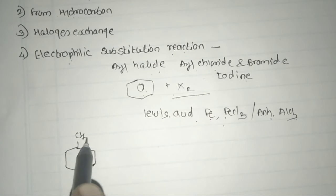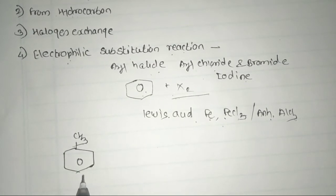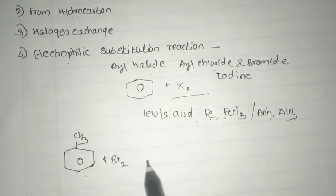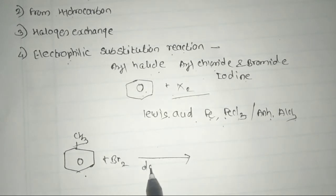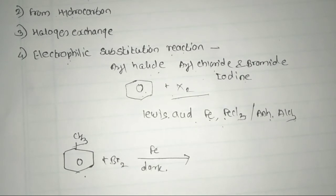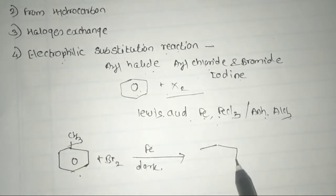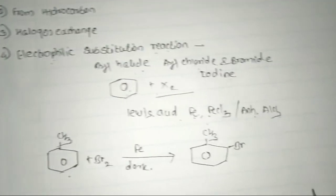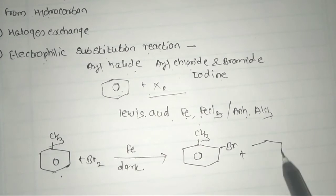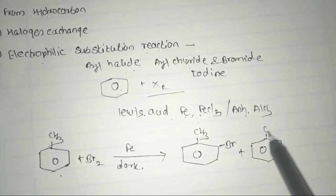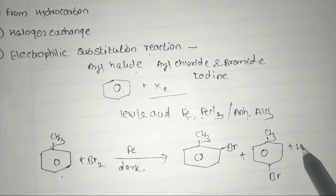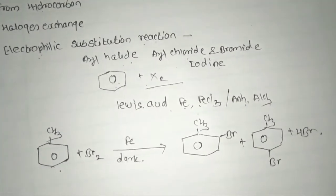For example, toluene — a derivative of benzene — is treated with bromine in the presence of dark conditions and iron as a Lewis acid catalyst. This gives ortho-bromotoluene and para-bromotoluene, with HBr as a side product.